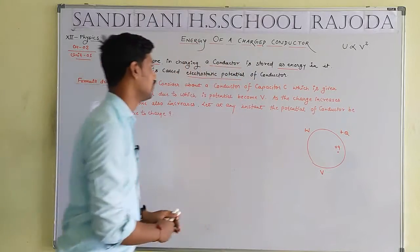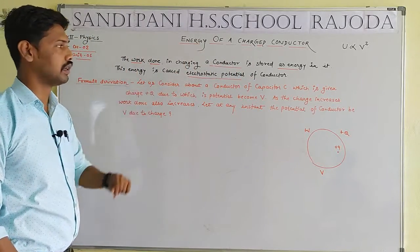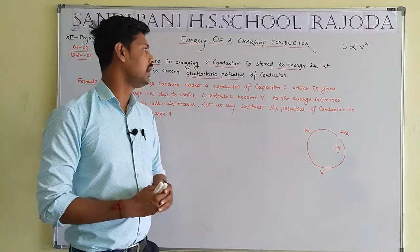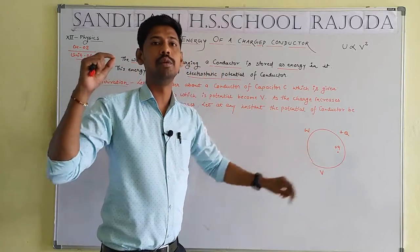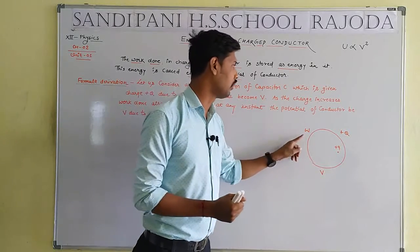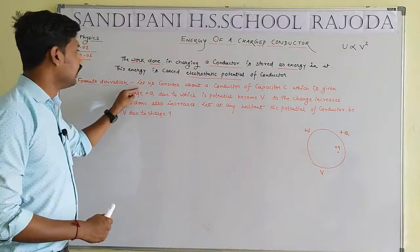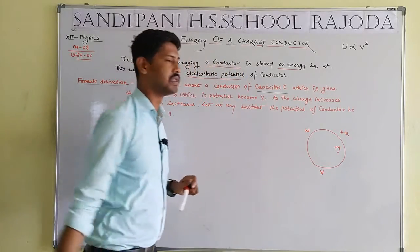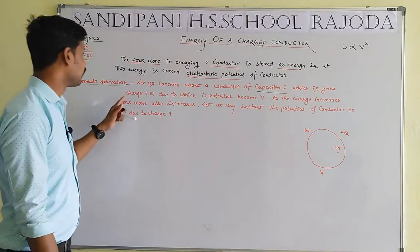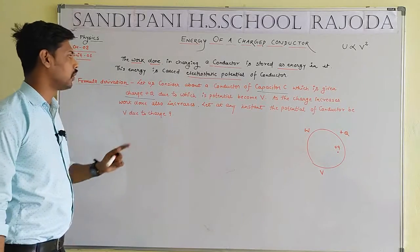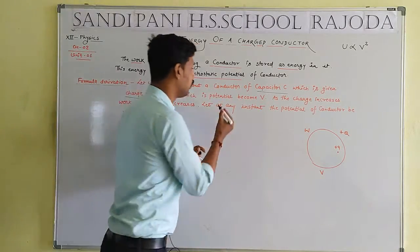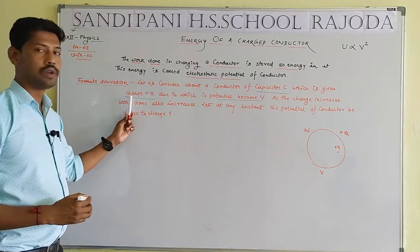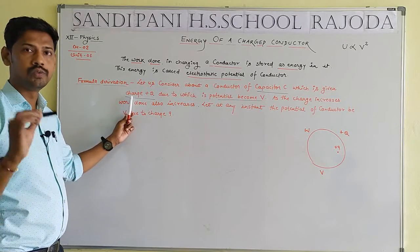Now the mathematical portion of the question — the derivation. Let us consider any capacitor with capacitance equal to capital C. The conductor of capacitance C is given a charge equal to plus Q, due to which a potential is developed. The potential is developed by the total amount of charge.